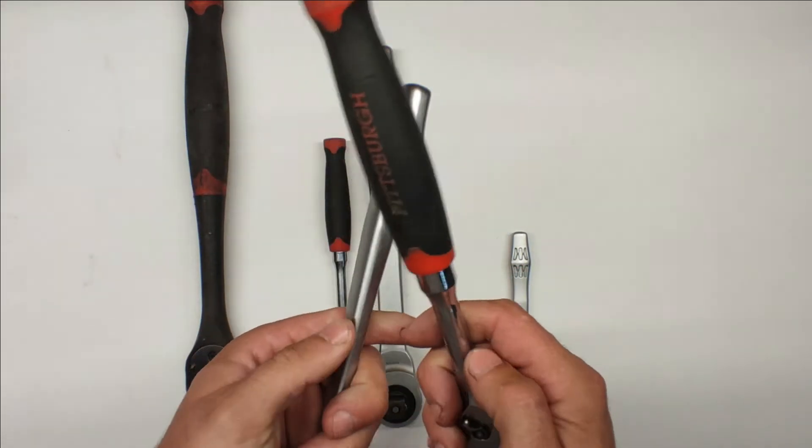The main difference between Pittsburgh and Wera is that the Wera is way more sturdier, more beefier. Also, if you look at the head, it's way smaller, way thinner, so it will fit in tight spots. Look at that half-inch, that's massive right there.